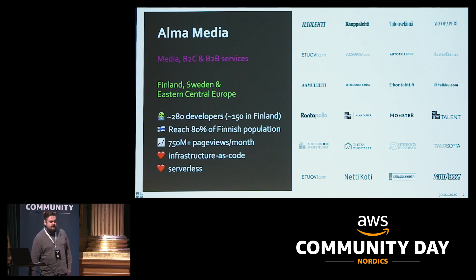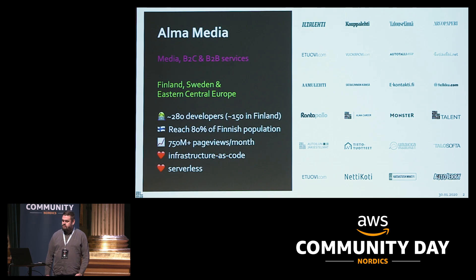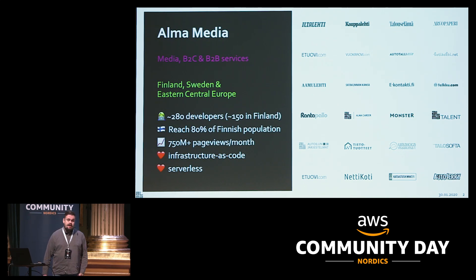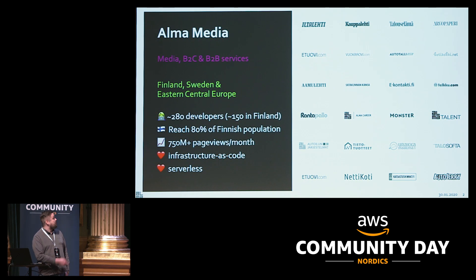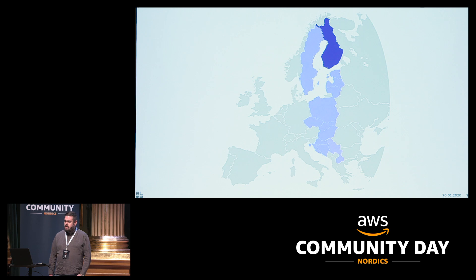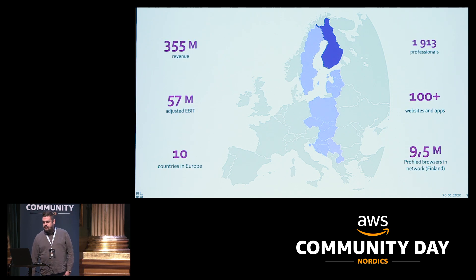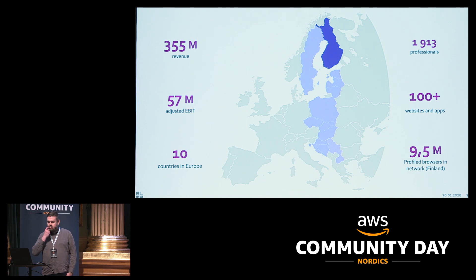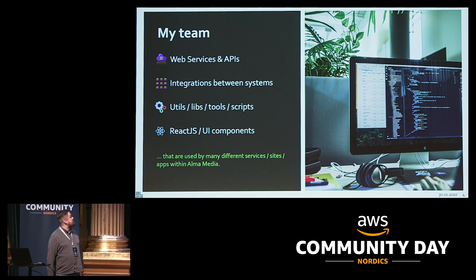We love infrastructure as code because we have somewhere around 100 AWS accounts. We also like serverless quite a lot — we have something in the ballpark of 2 billion Lambda invocations per month. If there are any Finns in the audience, you'll probably recognize some of the brands. Here's Alma on the map with some key figures; for this crowd, the most interesting one is the 100-plus websites and apps.